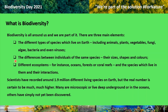Number two: the differences between individuals of the same species, such as their sizes, shapes, and colours. Number three: different ecosystems — for instance, oceans, forests, or coral reefs — and the species which live in them, and their interactions.